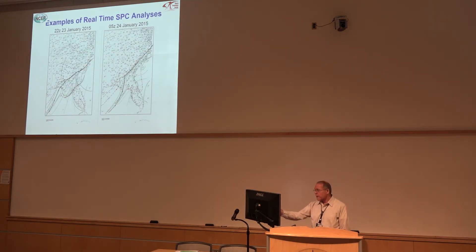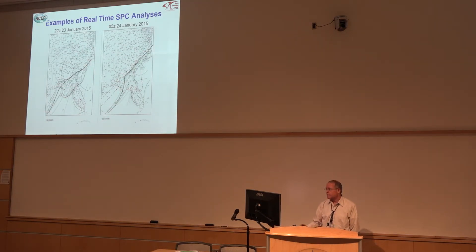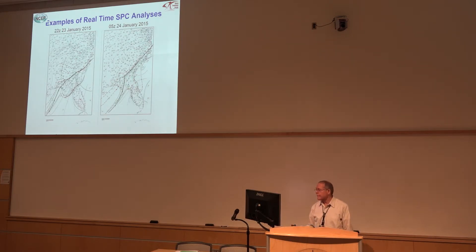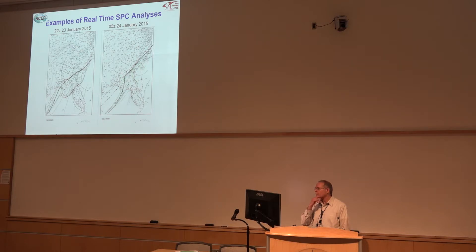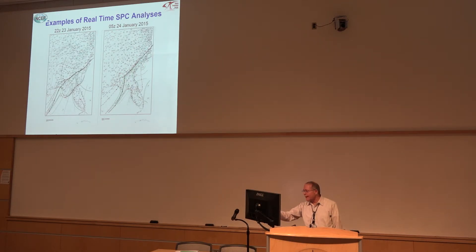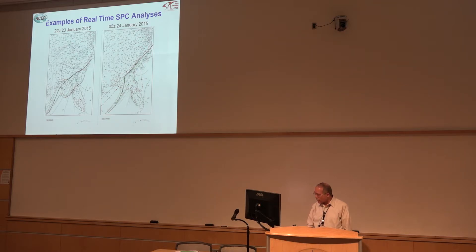Here are some real-time analyses that our forecasters used. This was a potential severe weather case in the southeast U.S. These charts are from 22Z and then at 5Z at the end of the shift. You can see the changes in the fronts and the lows.